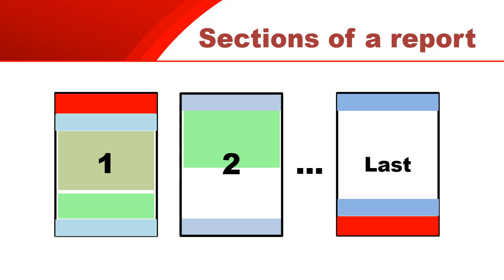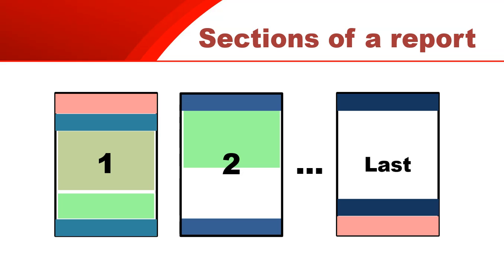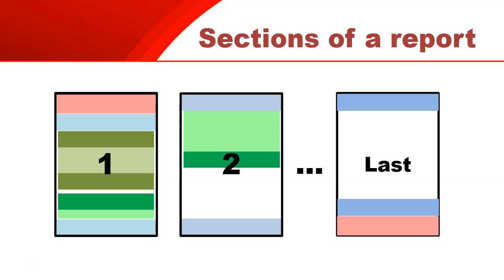Just to recap: the red parts at the top and bottom of the report — if they ask you to put something at the top of the first page only, you know that goes in the report header; if they want it at the bottom of the last page, that's the report footer. If they ask for something at the top of each page, put it in the page header, or the bottom of each page in the page footer. If they want something for each individual grouping, that goes in the group header or group footer. So let's go apply this to our calculations now.